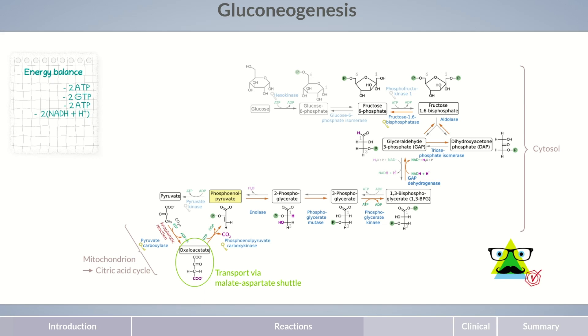Fructose 1,6-bisphosphatase is one of the three key enzymes of gluconeogenesis. The other two key enzymes are pyruvate carboxylase and phosphoenolpyruvate carboxykinase. These enzymes regulate gluconeogenesis, as we'll see in the next episode.